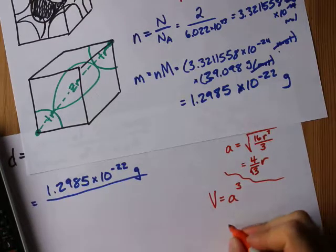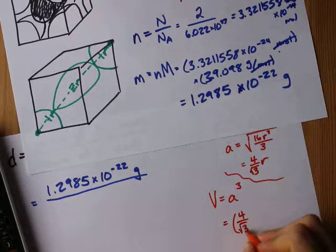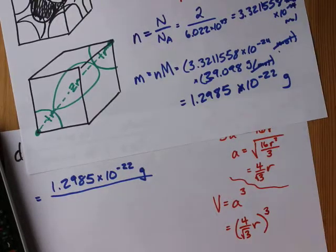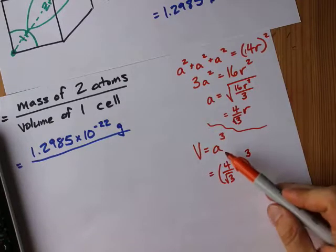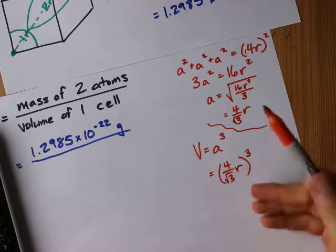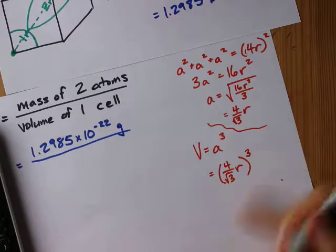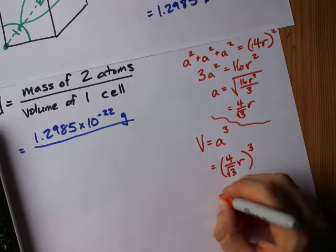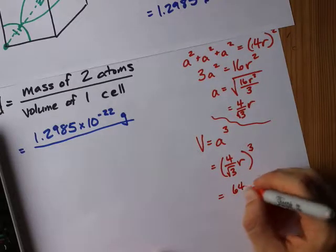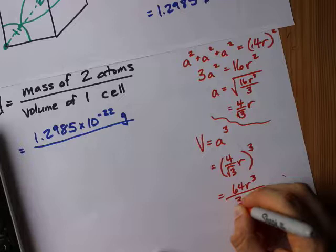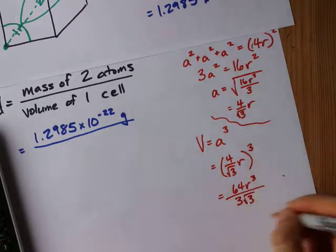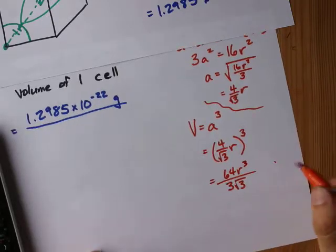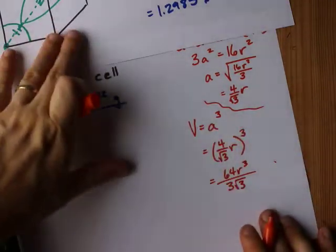So my volume is 4 over root 3 of r, all cubed. Told you it was going to be a little more complicated, but you've got the edge length based on r. Some teachers actually give you that already, and you just cube the edge length to get volume. We end up with 64r cubed over 3 root 3. But we need the radius to get the volume of the cell.